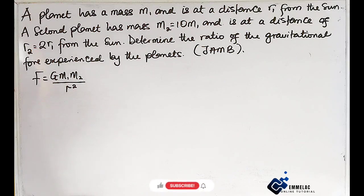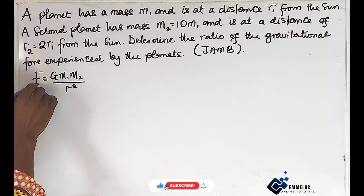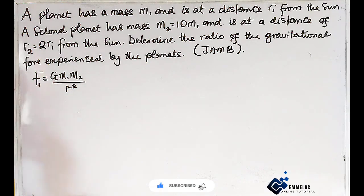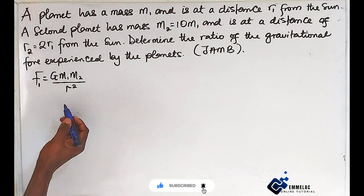For the first planet which has mass m1 and is at a distance r1 from the sun, we have F1 = GMsm1/r1², where Ms is the mass of the sun.